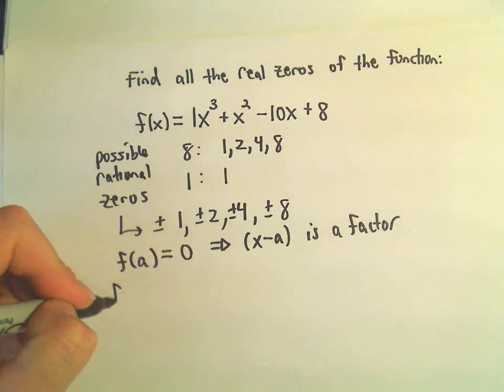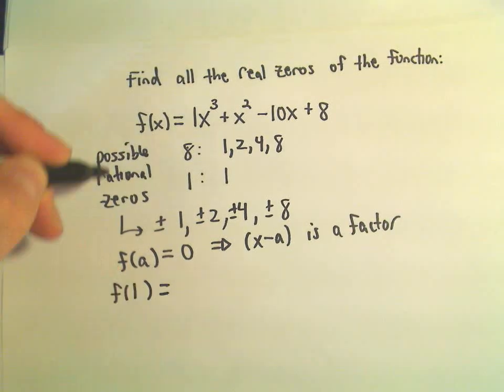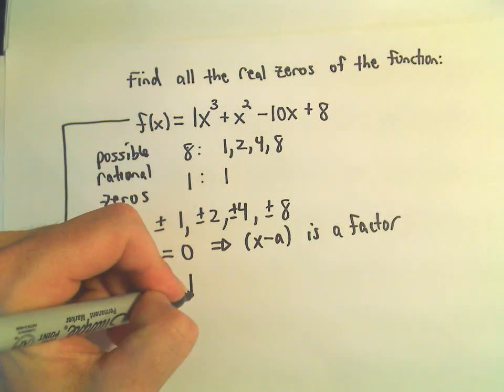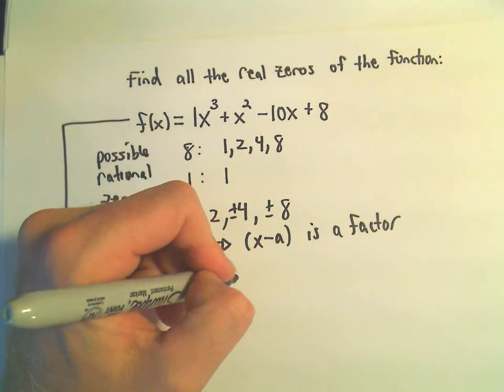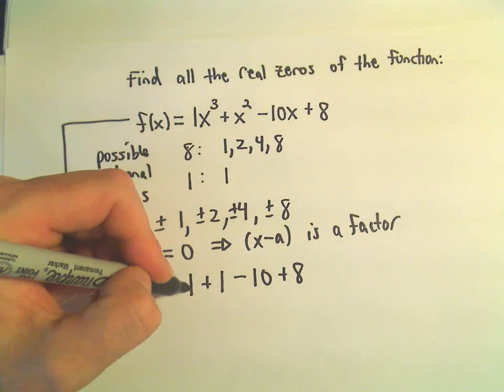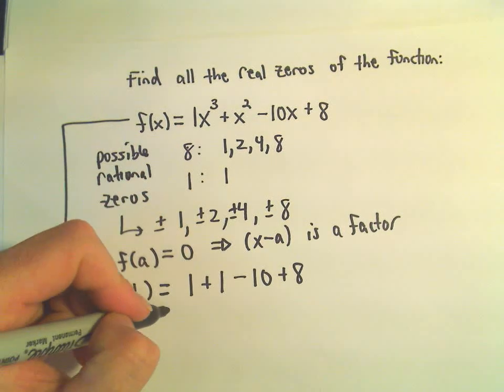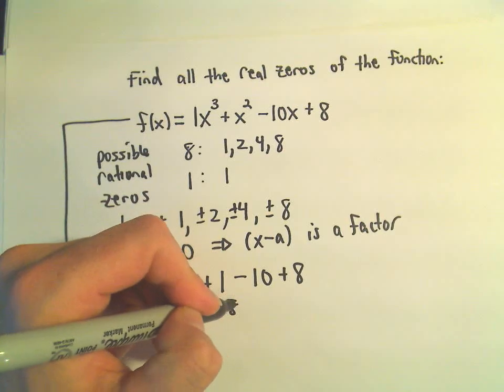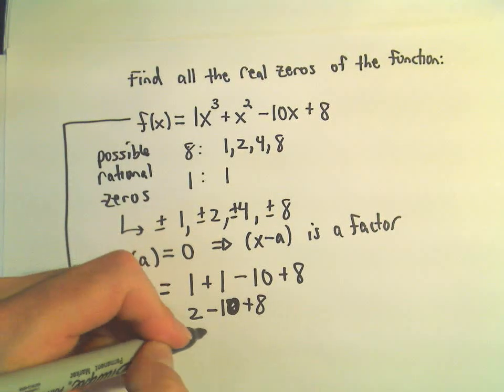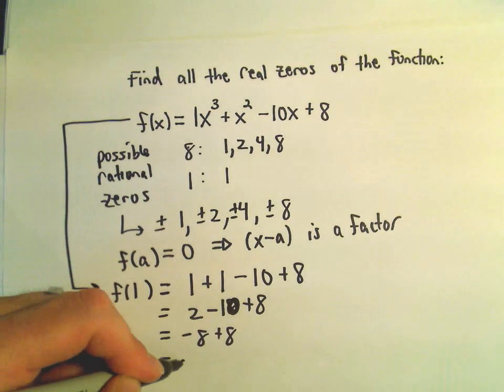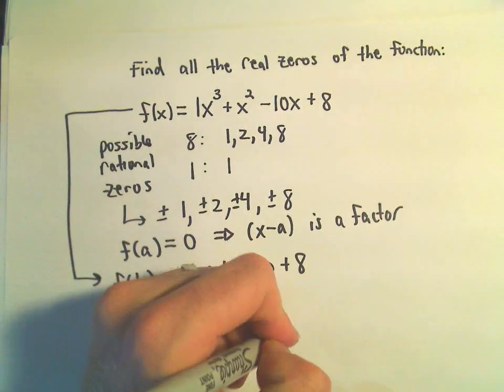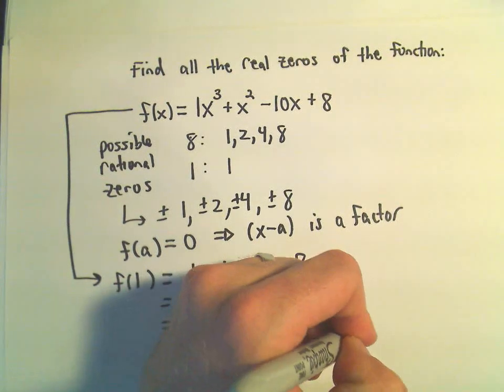So in this case, if we plug 1 into our function, we would get 1 cubed plus 1 squared minus 10 times 1, which would be 10, plus 8. Well, 1 plus 1 is 2, we've got 2 minus 10 plus 8. 2 minus 10 is negative 8, and negative 8 plus 8, hey, that's 0, which is good because now we know that, in this case, x minus 1 is a factor.